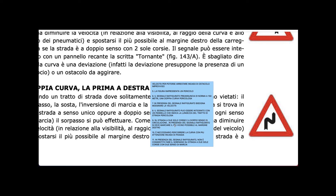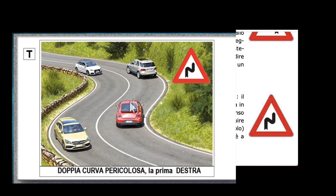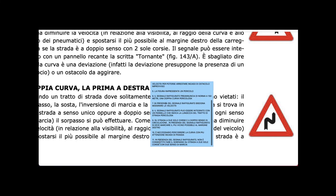On a two-lane road with two-way traffic — 'strada a due sole corsie a doppio senso di circolazione' — when this sign is present, we must stay as close as possible to the right margin of the carriageway. Also, when it is raining, we need to go with a lot more attention — 'con più attenzione in caso di pioggia'.